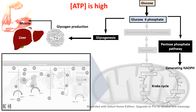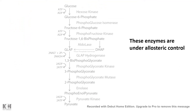We can clearly understand that this 10-step enzymatic process of glycolysis is highly regulated and totally dependent upon the energy demand. This process is highly regulated by allosteric modulation of several glycolytic enzymes. Not all enzymes of the glycolytic pathway are under allosteric modulation, but key enzymes such as hexokinase, phosphofructokinase, and pyruvate kinase are under the control of allosteric modulators.